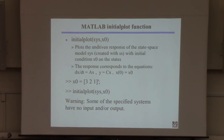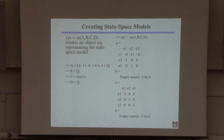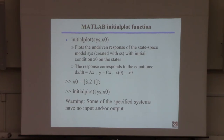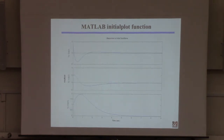You first create the sys object — that wasn't so hard. Then you issue the initial(sys, x0) command. The warning that says 'some specified systems have no input and/or output' is because we set B and D to zero — it's nothing to worry about. Issuing this command gives you the plot.